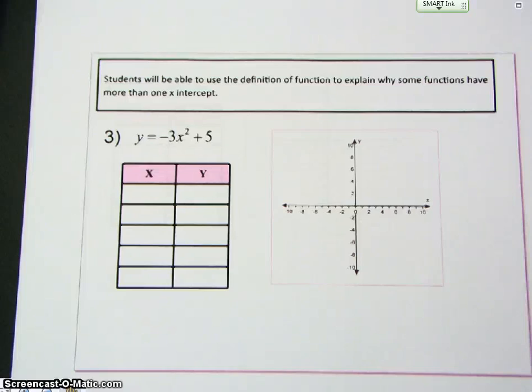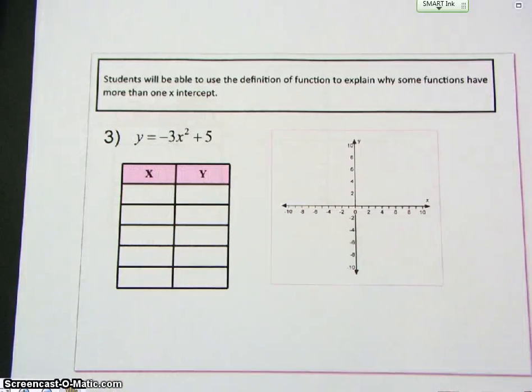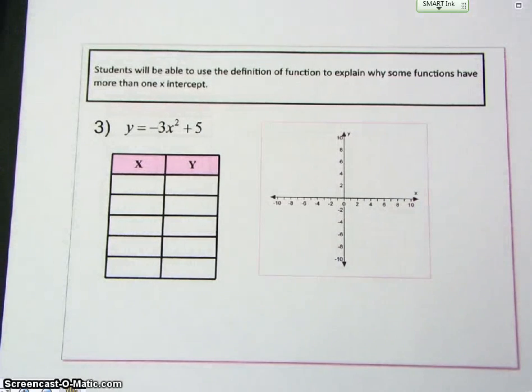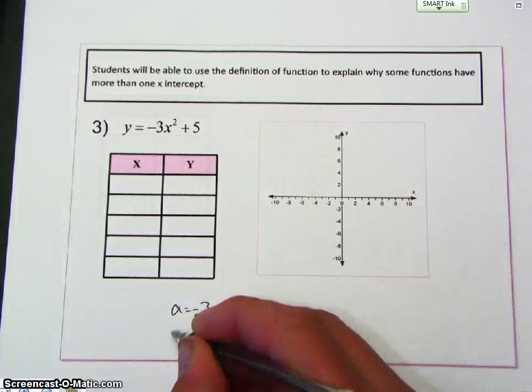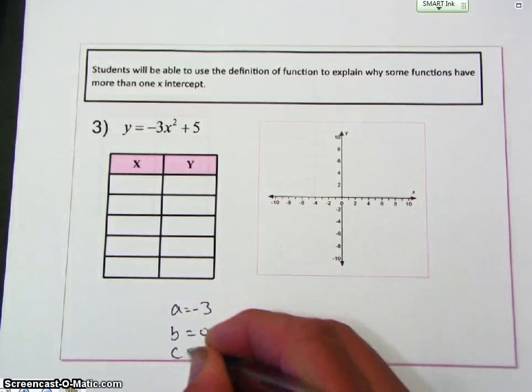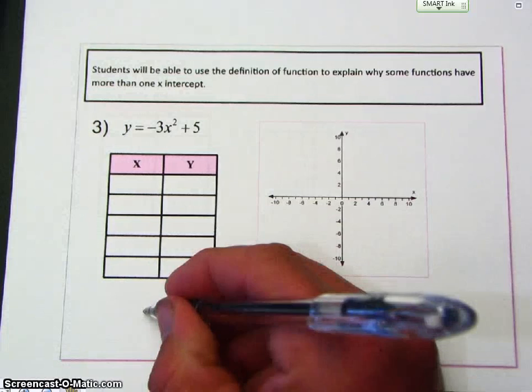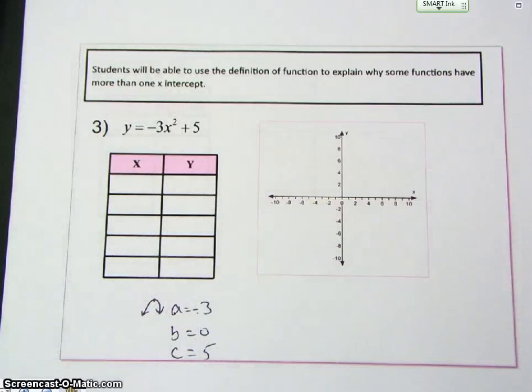We'll maybe use the definition of a function to explain why some functions have more than one x intercept. Here's an extra objective for this problem. So a is negative 3, B is 0, C is 5. A is negative. So we know it opens down. So my vertex will be a max or be the highest point.